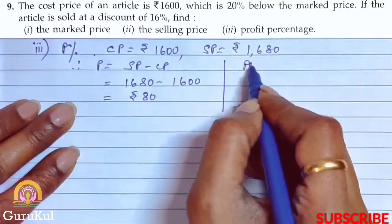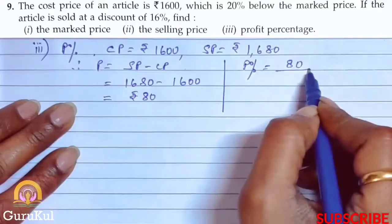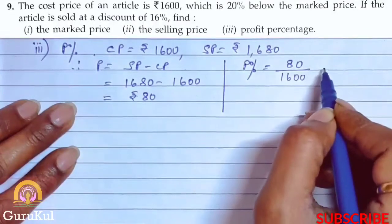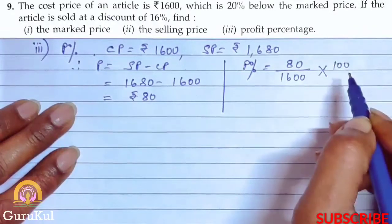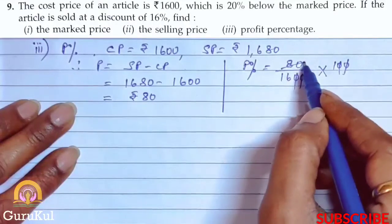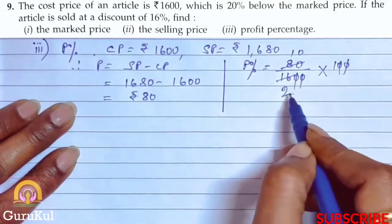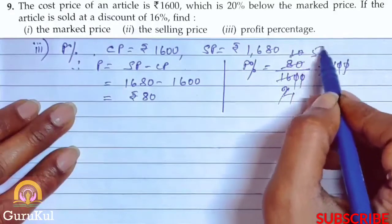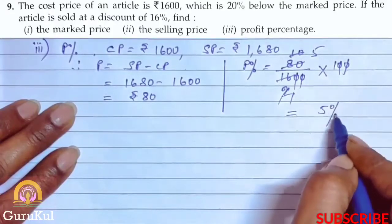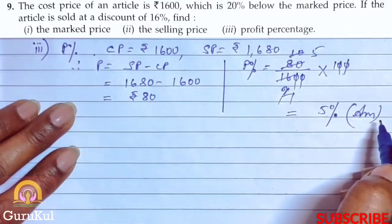Now we need to find the profit percentage. Profit percent equals profit divided by cost price (1600) into 100. After cancelling equal zeros and reducing, the profit percentage comes out to be 5%. So question number 9 is complete.